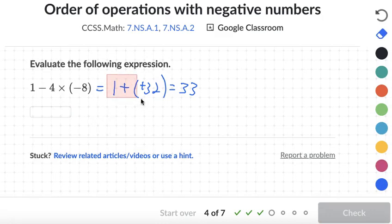Another way to look at this problem would be to change this subtraction sign to a plus negative 4. And now we are doing a negative times a negative. So this would be 1 plus positive 32. Because negative times negative is positive. And we get 33 again.